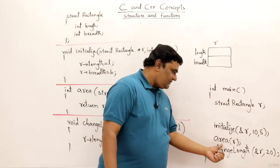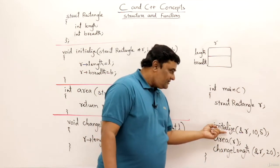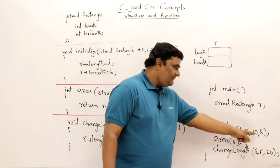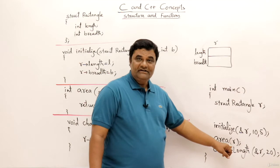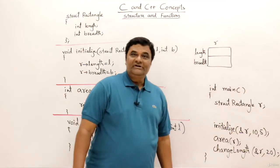There is a function for initialize, there is a function for area and change length. Let us see the functions. Initialize function, this we want to initialize this rectangle by filling 10 and 5. This is for calculating area of a rectangle. This is for changing the length of a rectangle to 20.